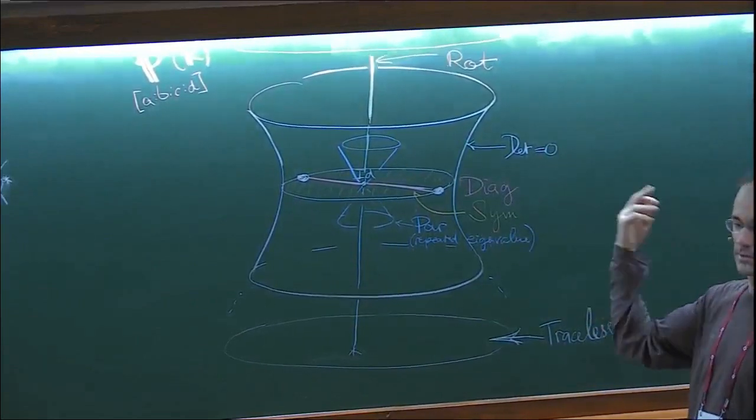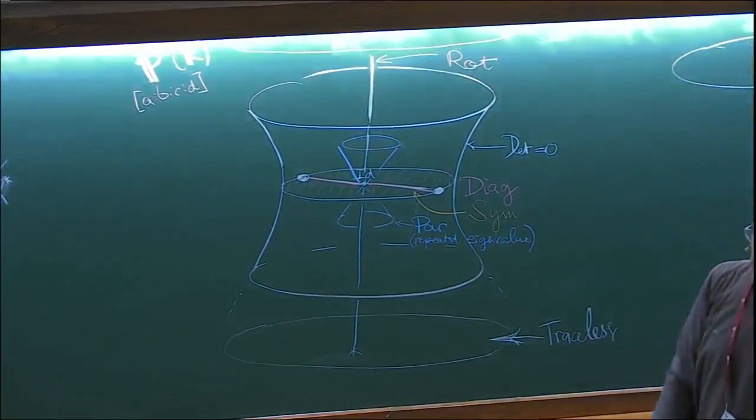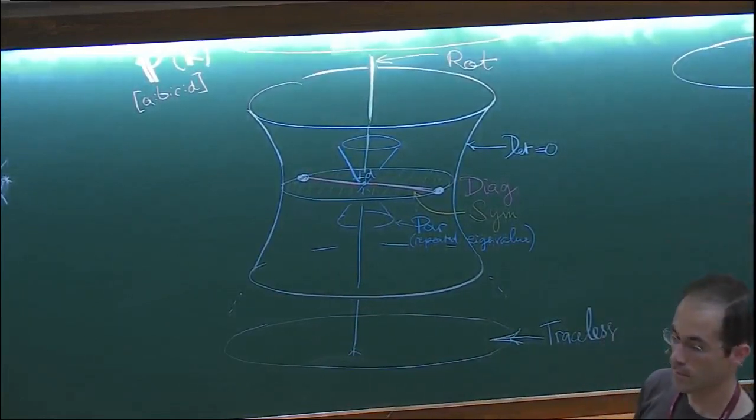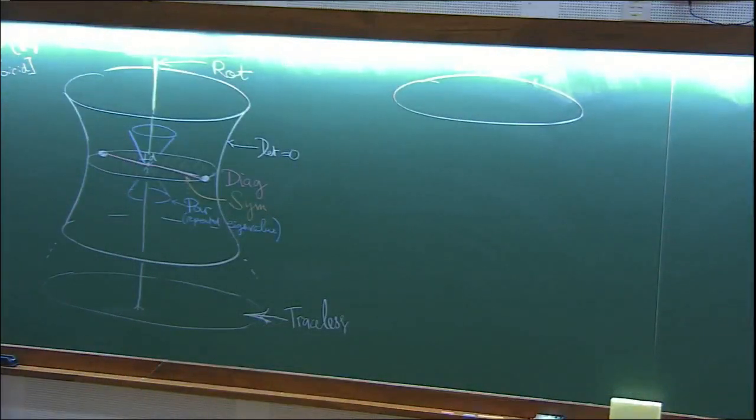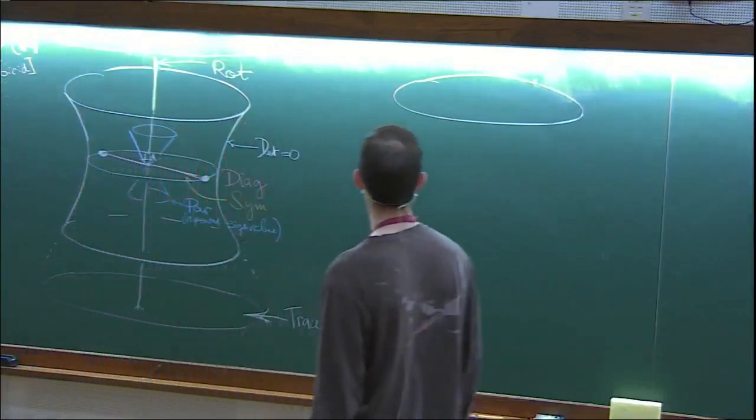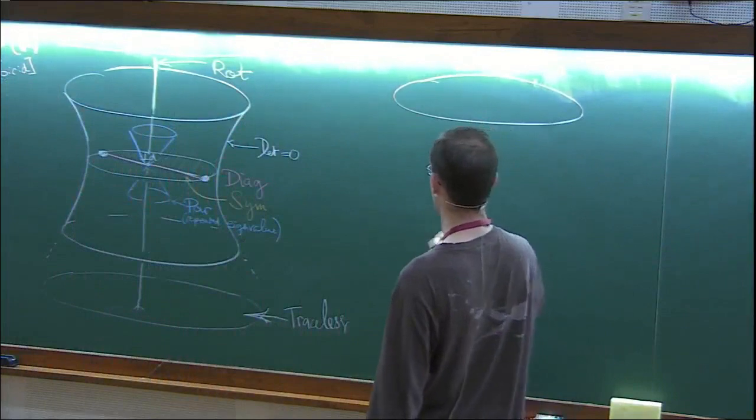There's a cone here of parabolic matrices. Parabolic means a repeated eigenvalue. The surface, as I mentioned before, was determinant equals zero. The outside is the region where the determinant is negative. That's just another copy of the same space, up to a projective transformation.